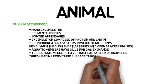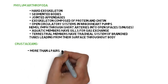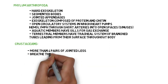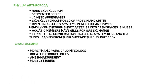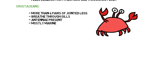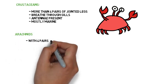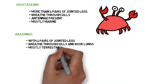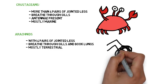Crustaceans have more than four pairs of jointed legs, breathe through gills, have antennae present, and are mostly marine. Examples of crustaceans are crabs and lobsters. Arachnids have four pairs of jointed legs, breathe through gills and book lungs, and are mostly terrestrial. Examples of arachnids are scorpions and spiders.